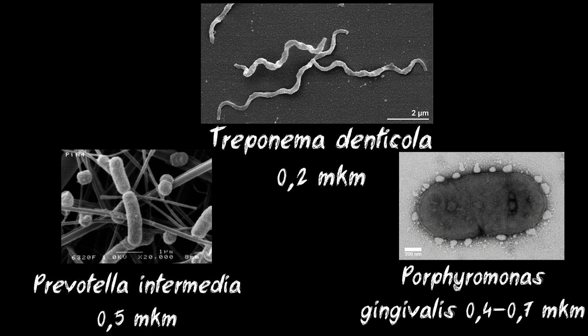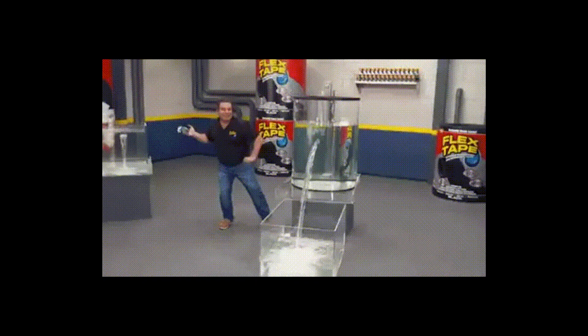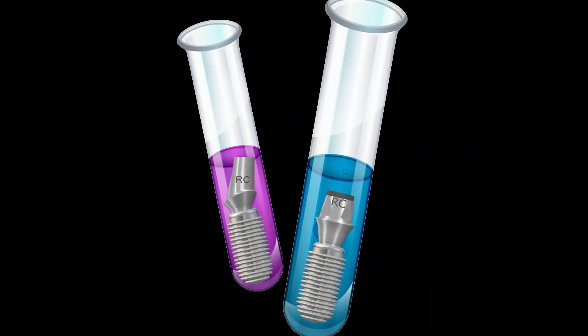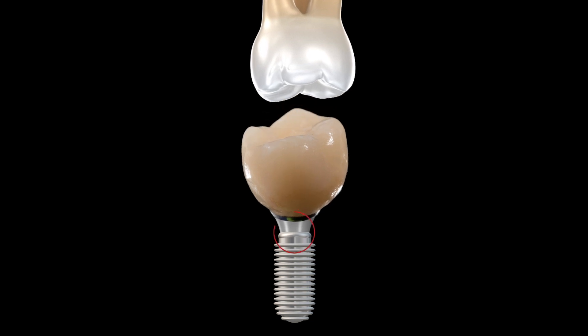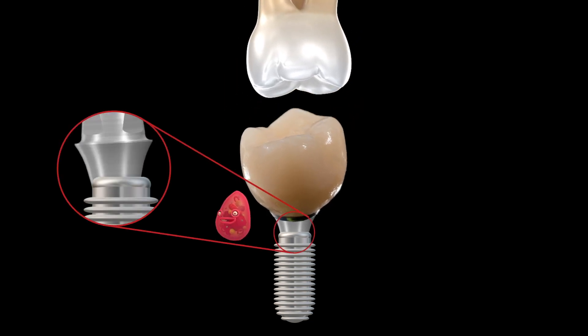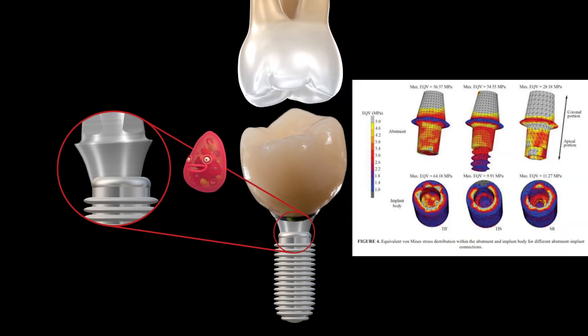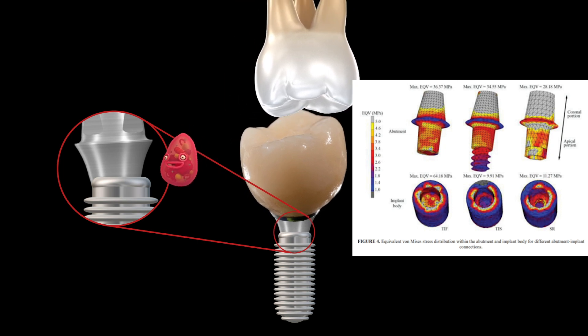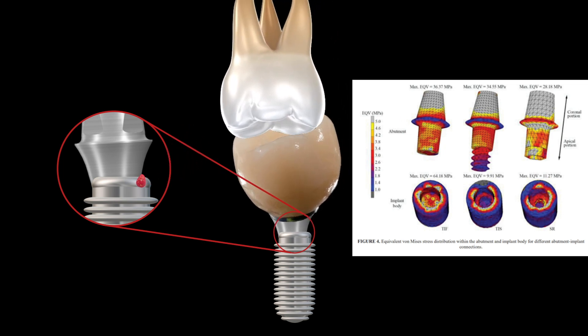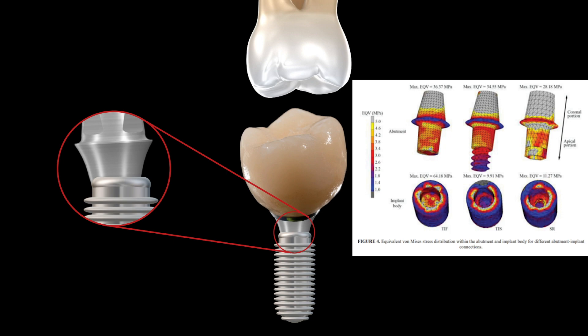The size of periodontal pathogenic microorganisms — for example, Treponema denticola — can be 0.2 microns. The studies showing complete sealing of components by method of bacteria inoculation do not take into account the chewing load on the implant. Although it cannot be ignored, because it is proven that when chewing, the main deformation occurs exactly at the junction of the implant with the abutment. The gaps open, the fixing screw loosens, and the tightness is broken.